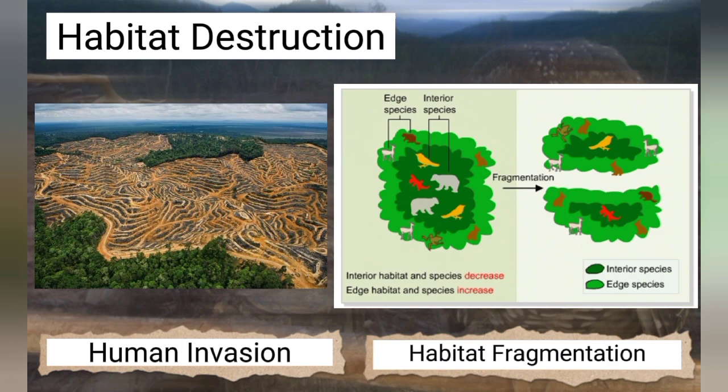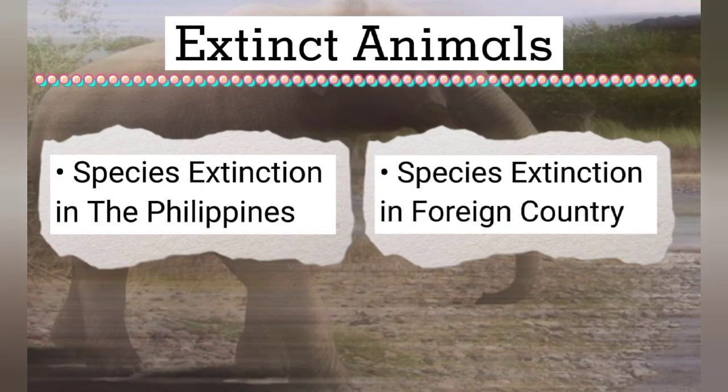Habitat destruction through human intervention and habitat fragmentation — dark green represents an entire species and green represents edge species. Extinct animals include species extension in the Philippines and species extension in foreign countries.